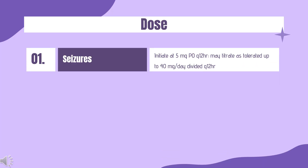Dose — Seizures. Clobasam is indicated for the adjunctive treatment of seizures associated with Lennox-Gastaut syndrome (LGS). Initiate at 5 mg PO every 12 hours; may titrate as tolerated up to 40 mg per day divided every 12 hours. Dose escalation should not proceed more rapidly than once weekly.